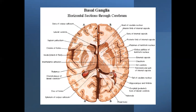The putamen and globus pallidus together form the lentiform nucleus — this is the putamen, and this is the globus pallidus. Lateral to the putamen you can see the external capsule, and lateral to the external capsule is the claustrum. This is the insular cortex, otherwise known as the fifth lobe of the brain.